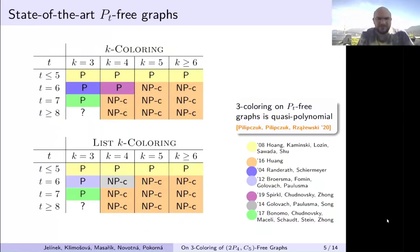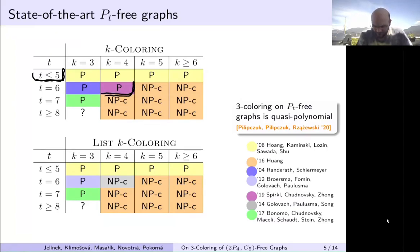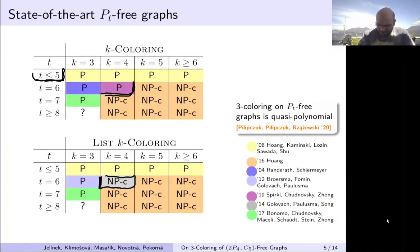If we forbid just a simple path on three vertices, then if the path is up to four vertices, all colorings are polynomial. However, if we allow larger paths, then almost everything is NP-complete up until path on six vertices and four coloring, which is also special because this is a problem where the complexity of K-coloring and list K-coloring differs quite a lot.